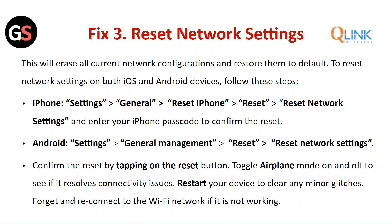For Android, go to Settings and General Management, click on Reset, and tap on Reset Network Settings. Confirm the reset by tapping the Reset button again. Toggle Airplane Mode on and off to see if it resolves the connectivity issue. Restart your device to clear any minor glitches, and forget and reconnect to the Wi-Fi network if it is not working.